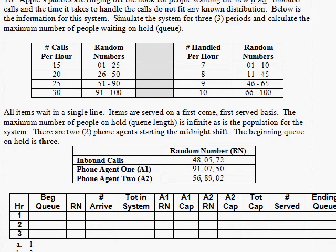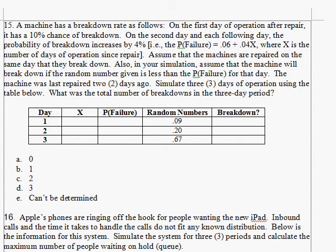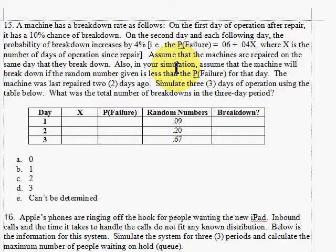Let's take a look at our review sheet from the other day. Our first question, if you remember, was a machine breakdown problem — very similar to the one we had in class. In this case, on the first day after the machine has been repaired, there is a 10% chance of a breakdown. The second day and any day after that, the probability of breakdown increases by 4%. So day one is 10%, day two is 14%, the next day is 18%, and so on. Machines are repaired on the same day, and we assume the machine will break down if the random number is less than the failure probability.